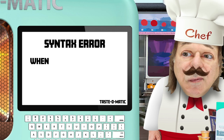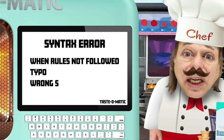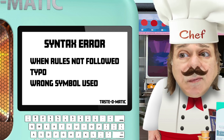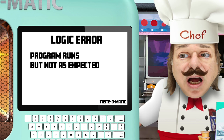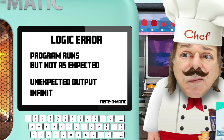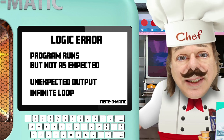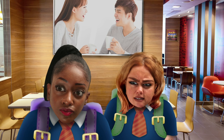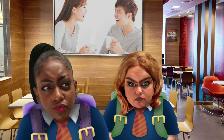So a syntax error is when the rules of the programming language are not followed, like a typo or when you use the wrong symbol. And with a logic error, the program runs but doesn't do what you expect it to, such as giving you an unexpected output or getting stuck in an infinite loop, and it can be caused by all sorts of reasons, including incorrectly using brackets and calculations. Shut up and give me my coffee, man!